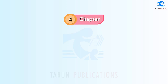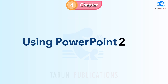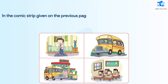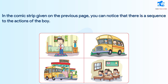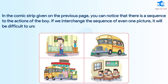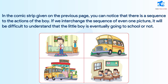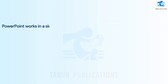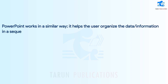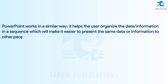Chapter 4: Using PowerPoint 2016. In the comic strip given on the previous page, you can notice that there is a sequence to the actions of the boy. If we interchange the sequence of even one picture, it will be difficult to understand that the little boy is eventually going to school or not. PowerPoint works in a similar way — it helps the user organize data and information in a sequence, making it easier to present to other people.